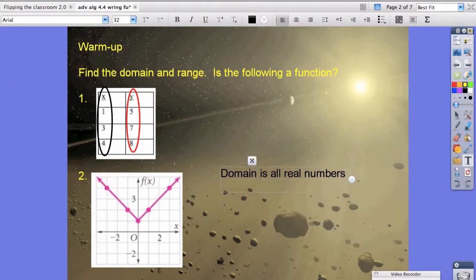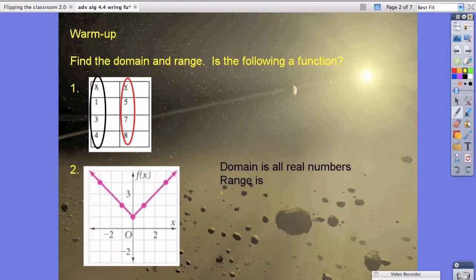Now our range is... Now we're going to look at our range as our y, so how low does it go and how high does it go? So notice, if we were to drag our pen up and down, well the lowest that it could possibly go is 1.